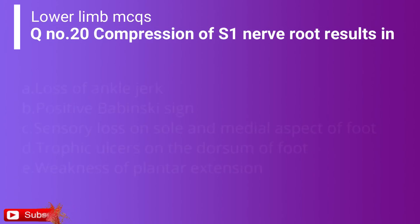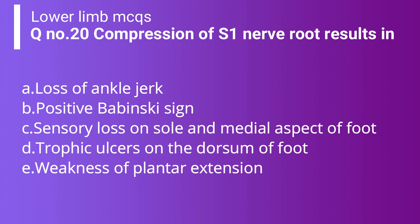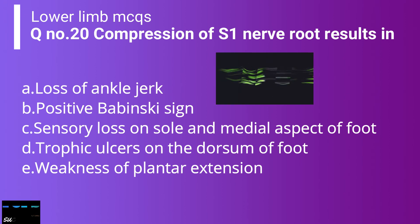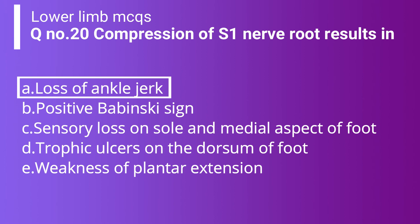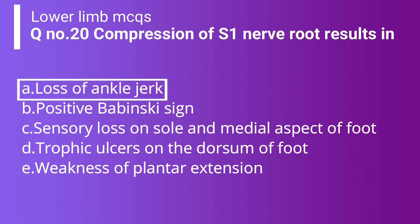Question number 20: Compression of S1 nerve root results in option A: loss of ankle jerk. Option B: positive Babinski sign. Option C: sensory loss on sole and medial aspect of foot. Option D: trophic sores on the dorsum of foot. Option E: weakness of plantar flexion. The correct answer is option A — loss of ankle jerk is the sign when there is compression of the S1 nerve root.